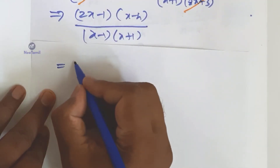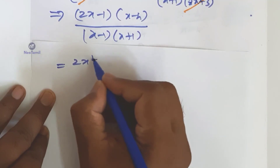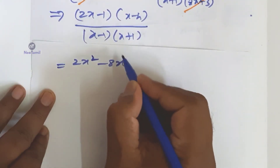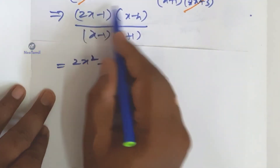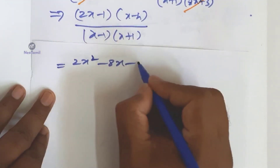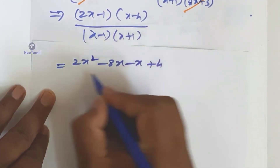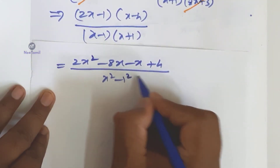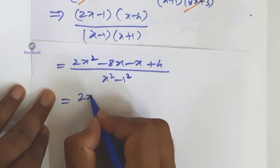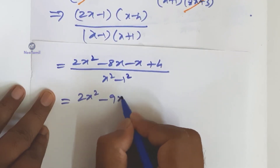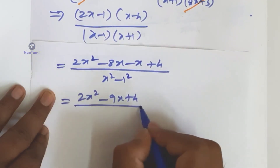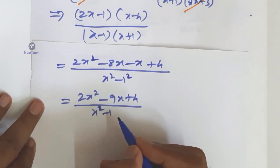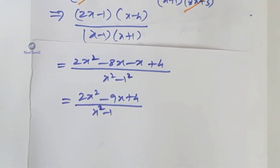Expanding the numerator: 2x multiplied by x gives 2x squared; 2x multiplied by minus 4 gives minus 8x; minus 1 multiplied by x gives minus x; minus 1 multiplied by minus 4 gives plus 4. The denominator uses the a plus b into a minus b formula: x squared minus 1. So the numerator becomes 2x squared minus 9x plus 4, divided by x squared minus 1.